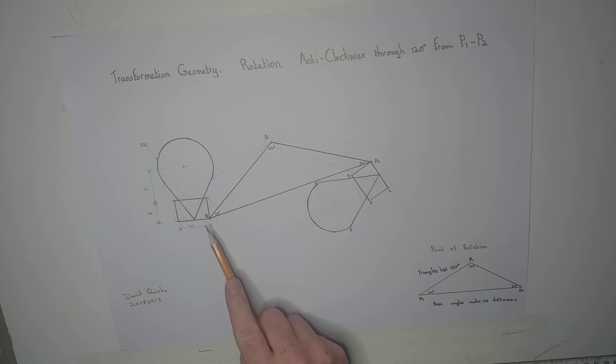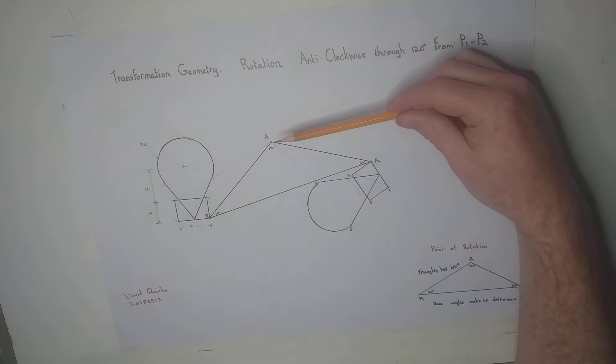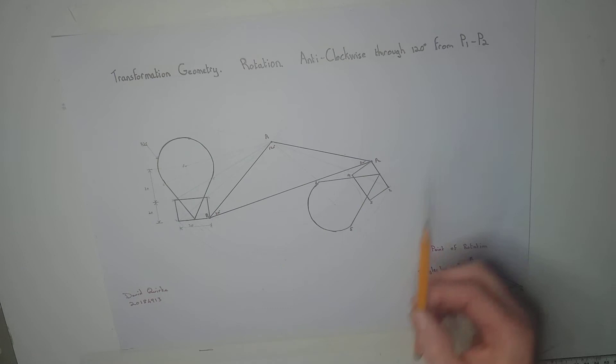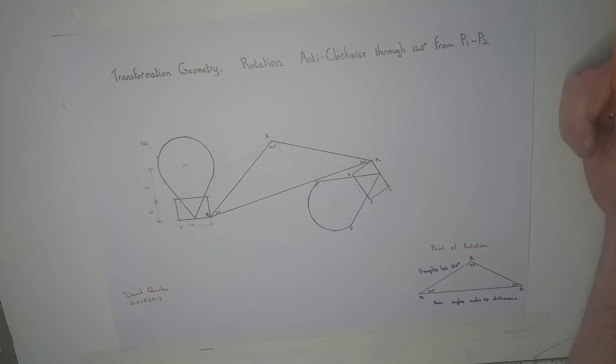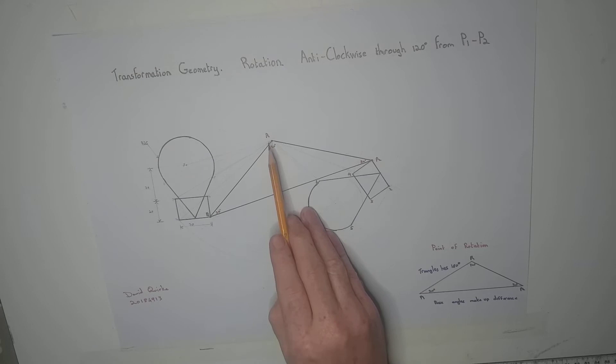So you have your line from P1 to P2. To find our point of rotation, from P1 you construct a line at 30 degrees, and the same from P2, draw a line at 30 degrees. Where these two lines intersect, they give us our point R, our point of rotation.